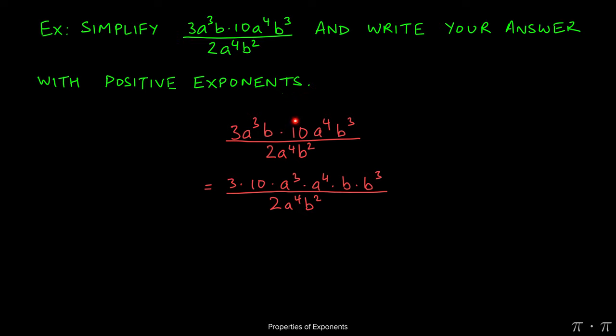So the 3 and the 10 can be grouped together at the beginning. The a to the third and a to the fourth can be written next to each other in the middle. And then finally, the last block of space can be given to b times b cubed. That gives us this.